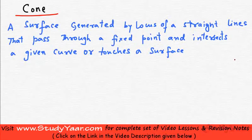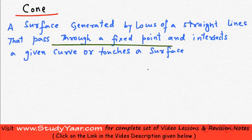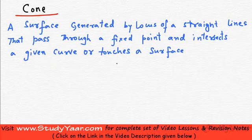Let's learn about cone. A cone is a surface which is generated by the locus of straight lines that pass through a fixed point and intersect a given curve or touch a surface.